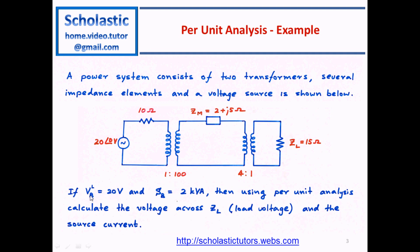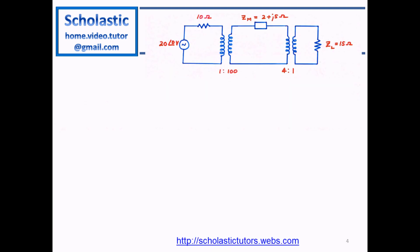If VBL equals 20 volts — this being the base value of the voltage at the left side of the system — and the power of the system is 2 kilo volt-amperes, this is common for any branch: SB equals 2 kVA. Using per unit analysis, calculate the voltage across the load and the source current drawn from the source.